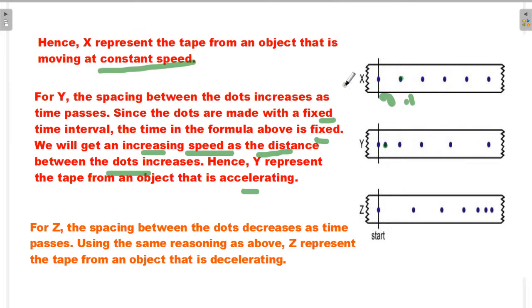So there are three tapes, X, Y, and Z, describing different situations. When the distance between two dots is equal, it indicates constant speed. For Y, the distance between dots increases when time passes.